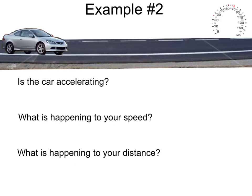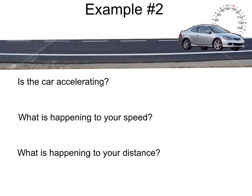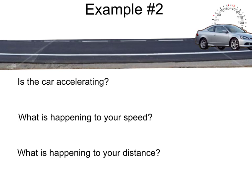Here's another example. Is the car accelerating? If you looked at that speedometer in the car, you would have seen the speed increasing from one value to the next. You would have seen the speed of the car increasing. So, is the car accelerating? Yes, it is. And since we're gaining speed, that would be a positive acceleration. What is happening to your speed? We just said that it is increasing — so we have an increasing velocity.